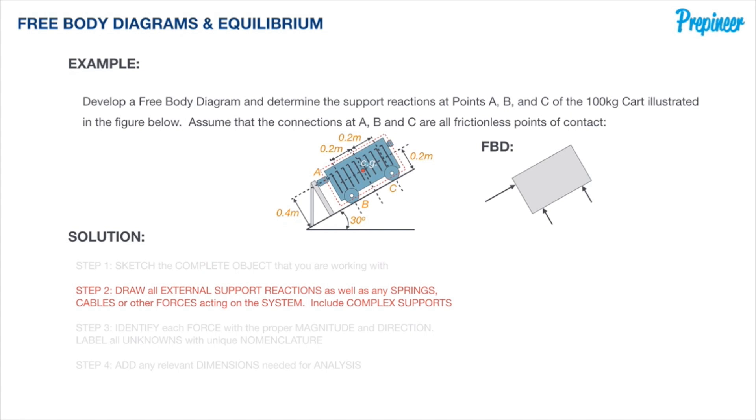Looking at our problem statement as well as the figure given, we know that the support reactions at points A, B, and C are going to be of significance. We know that the cart weighs 100 kilograms and that drops vertically from the center of gravity. These are all the forces acting on our object of interest. We need to move forward to our next step to identify each force with all the appropriate data needed to assess equilibrium.